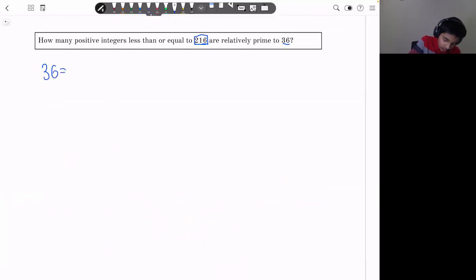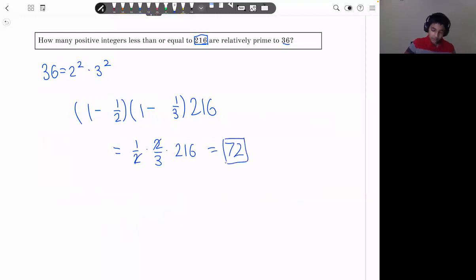So again, 36 is just 2 squared times 3 squared. And in order for a number to be relatively prime, it can't have a factor of 2 or 3. But as you can see again, 216 is a multiple of 2 and 3. So we can still apply this 1 half, 1 third logic. 1 half the numbers being a multiple of 2, and 1 third the numbers being a multiple of 3. This is just 1 minus 1 half times 1 minus 1 third times 216, which is 1 half times 2 thirds times 216. The 2's will cancel, and we're left with 72. That's the answer for this problem.